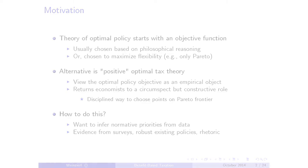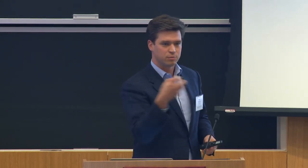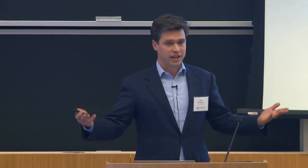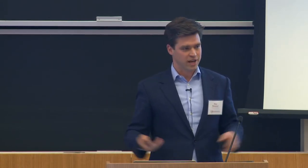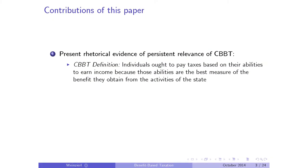I wanted to find out what political leaders said—for instance, what does President Obama say when he wants to raise the progressivity of tax rates? So the paper is going to present some rhetorical evidence of what I think of as the persistent relevance of classical benefit-based taxation. Here's the rough definition: individuals ought to pay taxes based on their abilities to earn income because those abilities are the best measure of the benefit they obtain from the activities of the state.